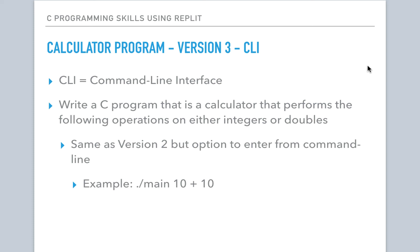Welcome back to the calculator program. This is version 3 — we're going to implement a command-line interface. This assumes you've watched the previous videos where you created version 1 with hard-coded values, and version 2 where you prompted for the numbers and operation. The goal here is to type, for example, '10 plus 10' on the command line and have it display the answer.